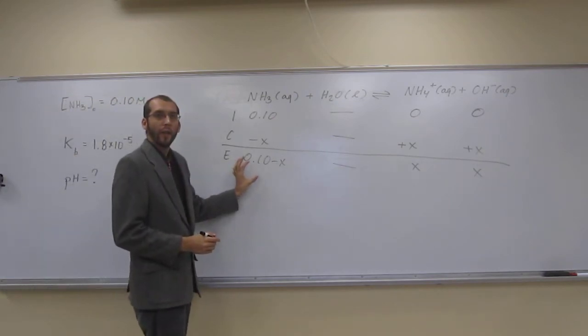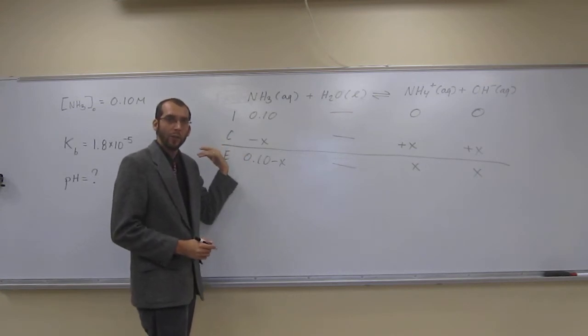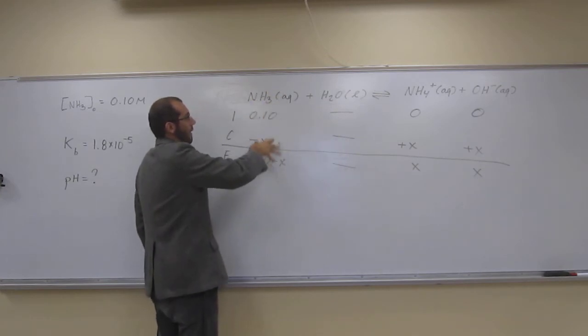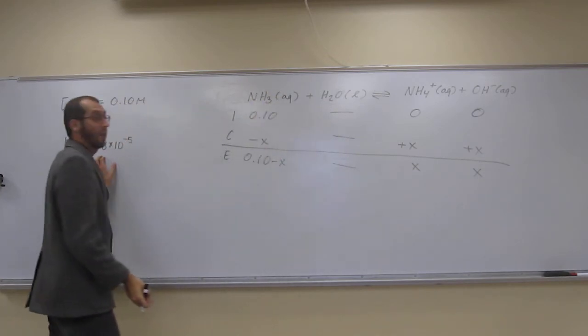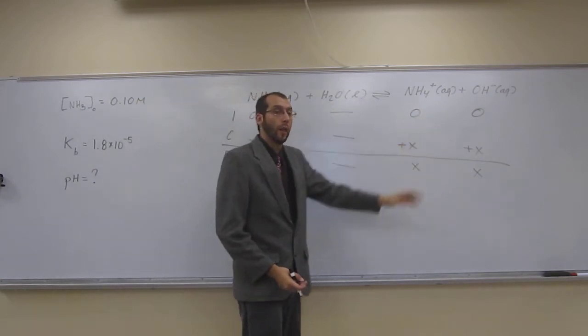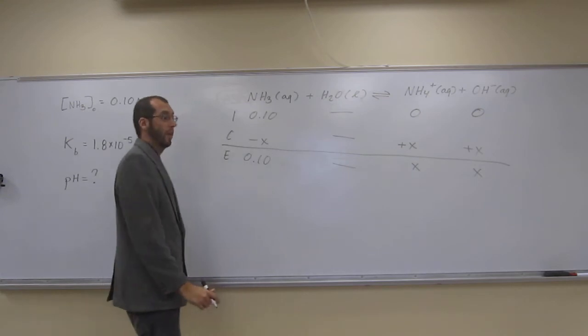So remember, what did I just say? We're going to use the 5% rule, and you can check this later. I'll let you do that on your own. So we're going to effectively say that this, because the Kb is so small, not very much dissociated. So we're going to just erase this X there, minus X.